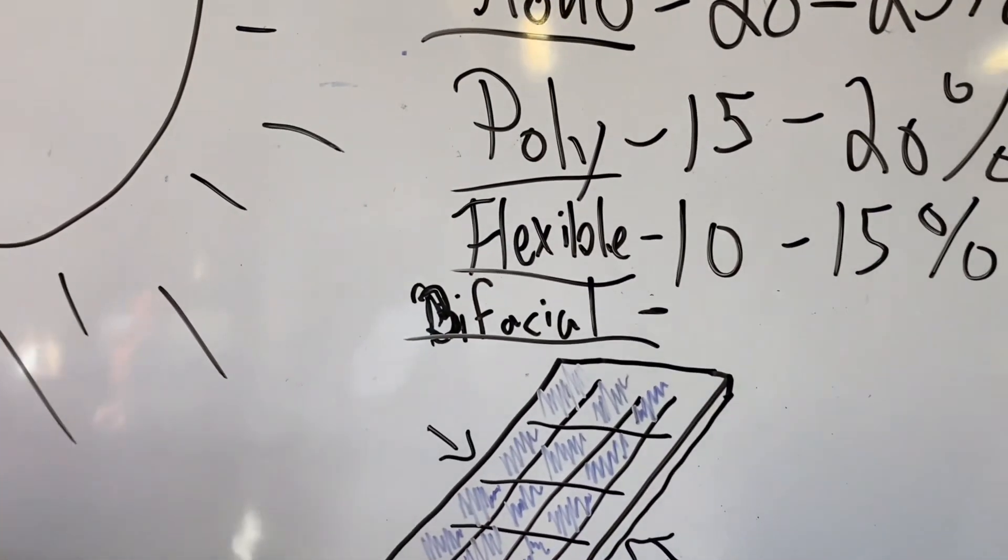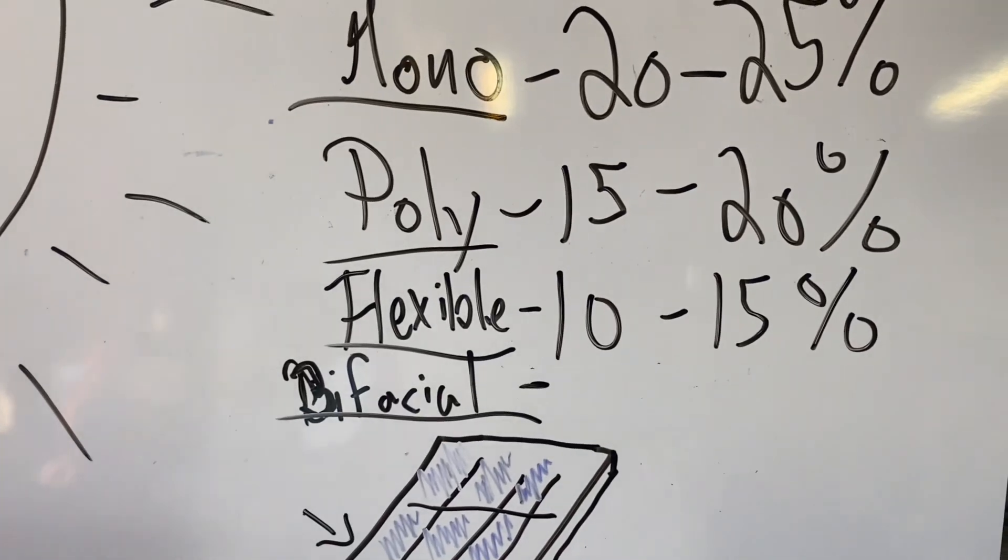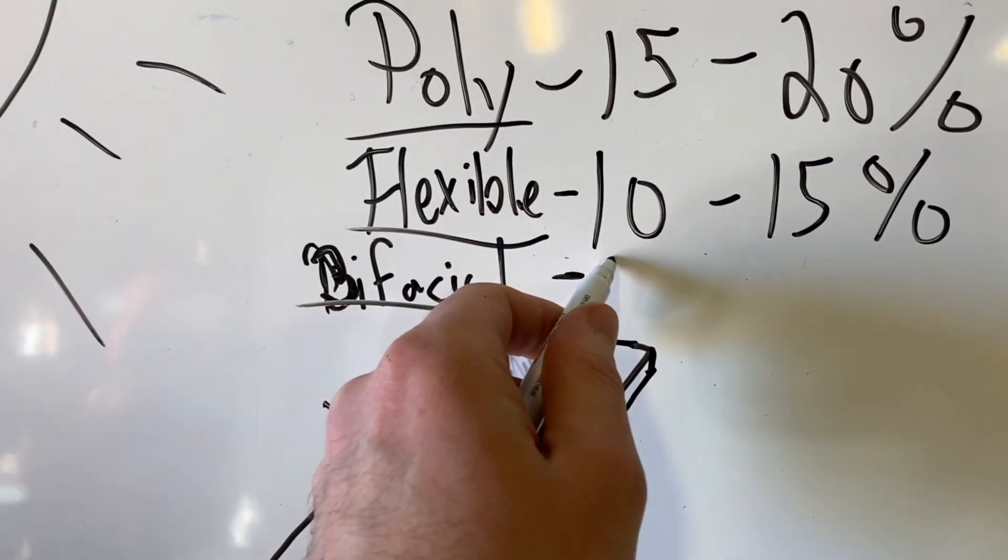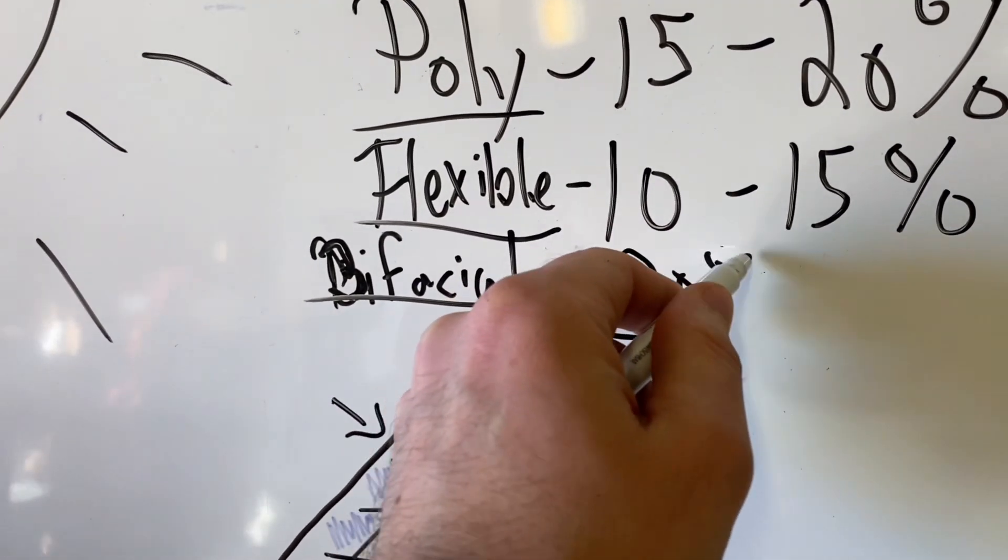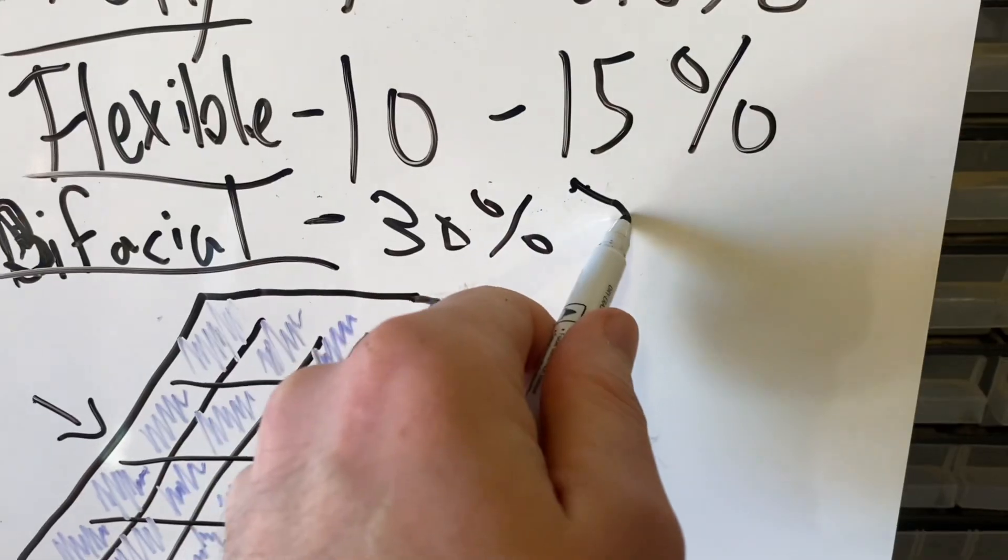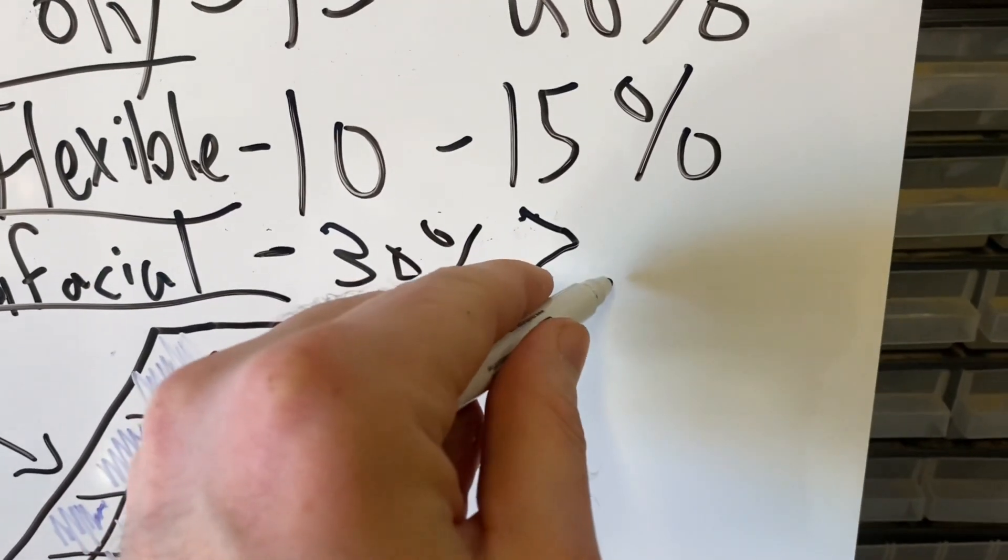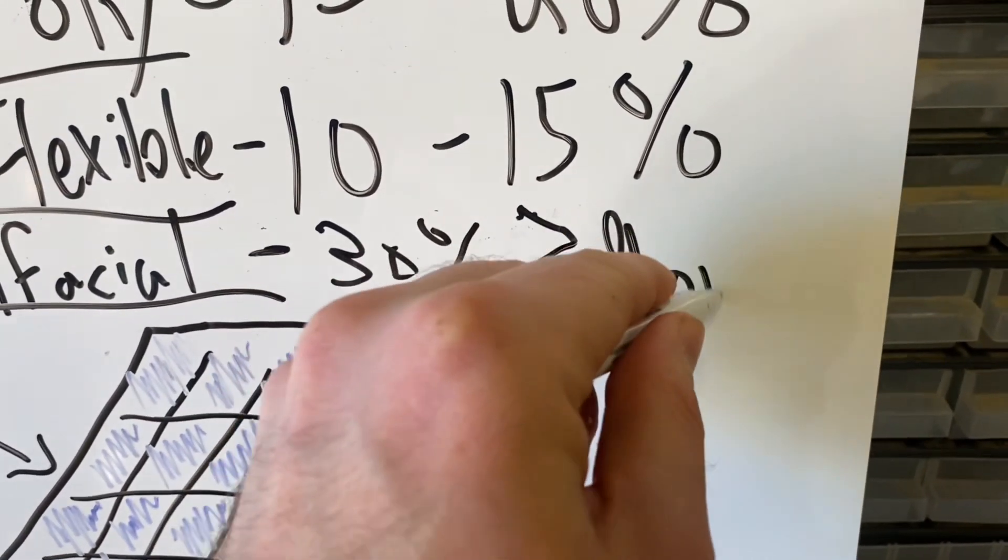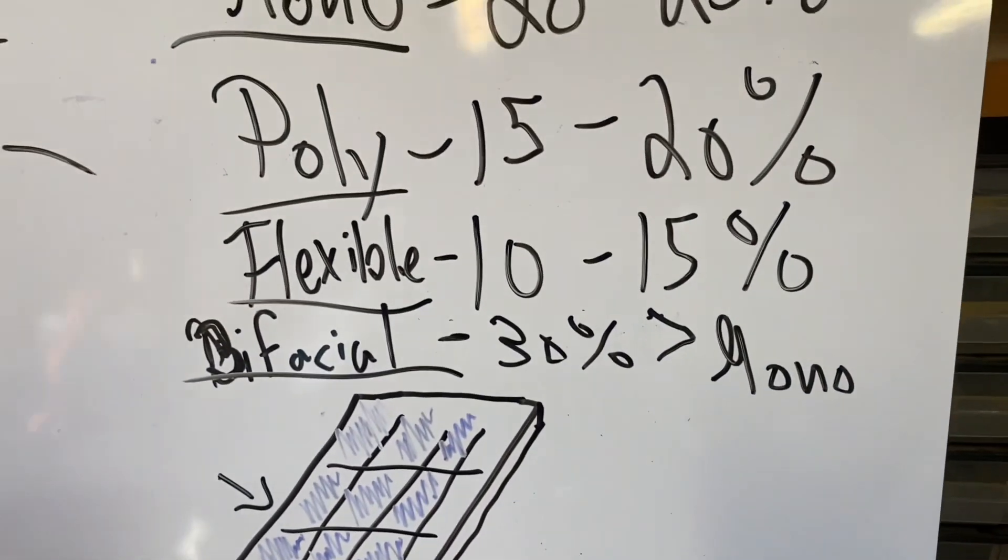With the right configuration, you could get the efficiency as high as 30 percent greater than your monocrystalline.